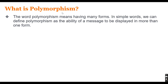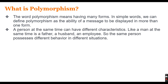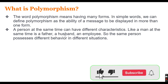Let's understand the concept of polymorphism with an example. A person at the same time can have different characteristics and can perform different roles. Like a man at the same time is a father, a husband, or an employee — three different characteristics. He is a single individual but can behave according to different roles. The same person possesses different behavior in different situations — this is an example of polymorphism.